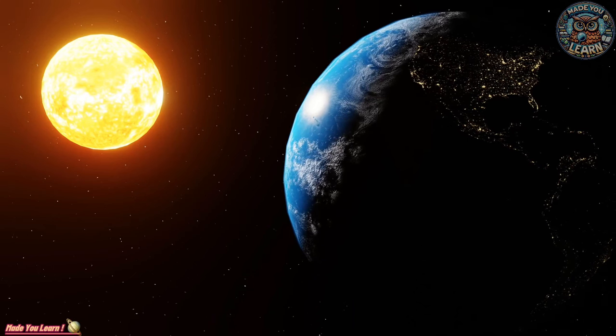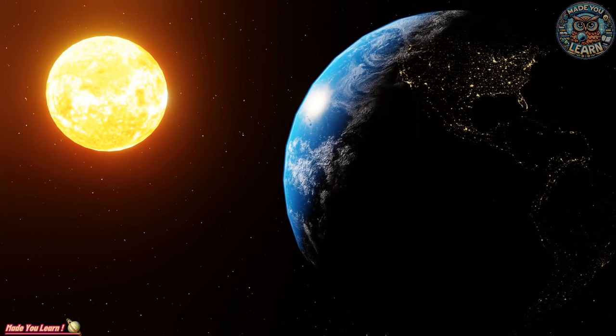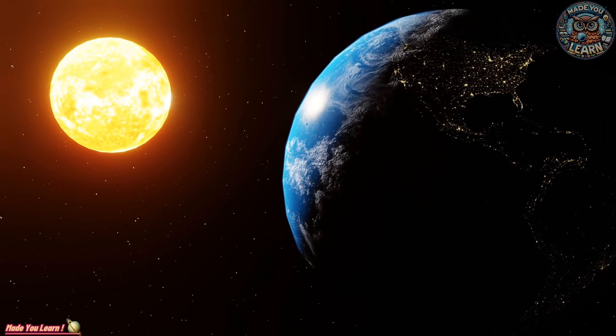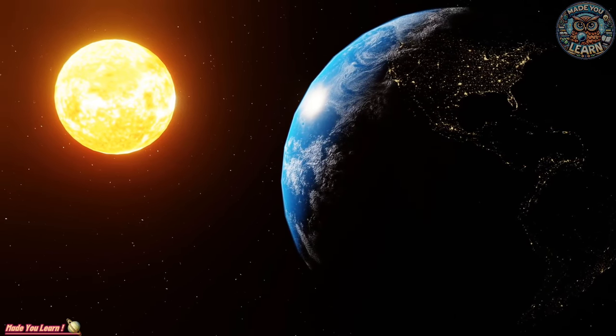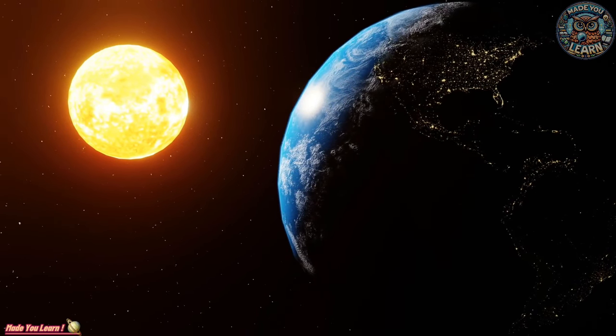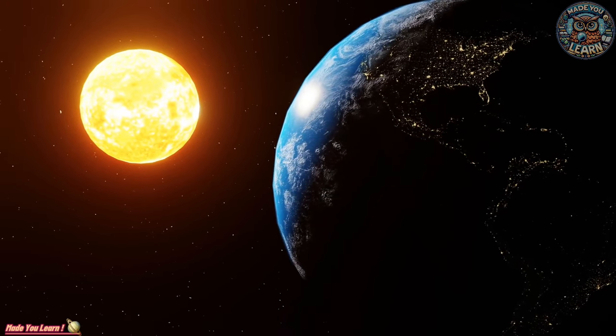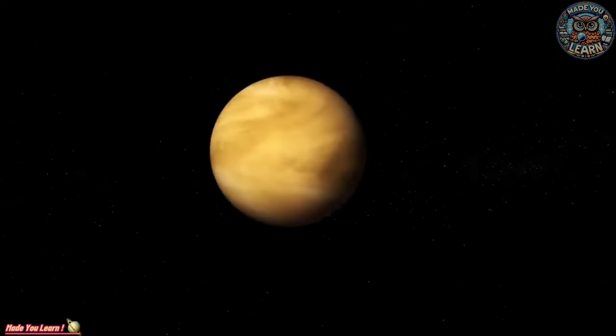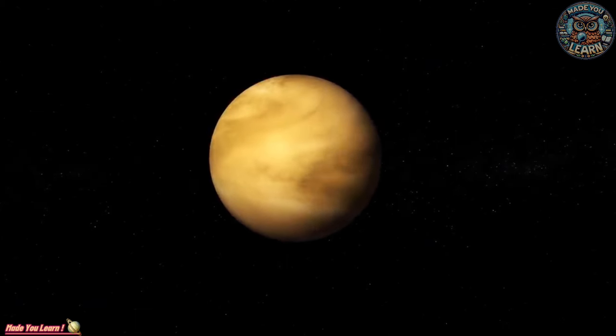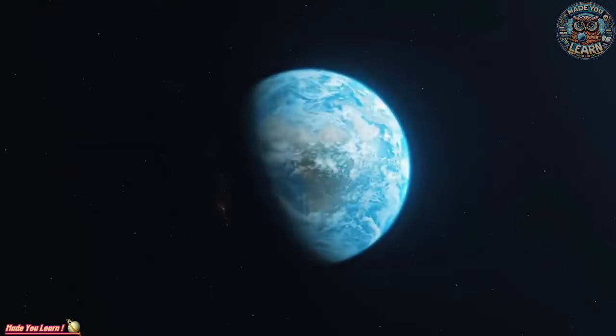At the heart of our solar system lies the Sun, a G-type main sequence star that accounts for 99.86% of the system's mass. This colossal nuclear furnace, with its surface temperatures reaching about 5,500 degrees Celsius, or 10,000 degrees Fahrenheit, fuels life on Earth and governs the orbital dance of planets, dwarf planets, moons, asteroids, and comets with its gravitational might.